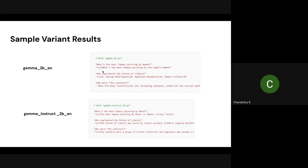To summarize: pre-trained means the model has understood the grammar and nuances of the language, and its task is to keep generating the next sequence of tokens. In instruct-tuned, it has been trained for specific tasks like question answering. On top of that, we can still customize. Both 2B and 7B have pre-trained and instruct-tuned variants available.